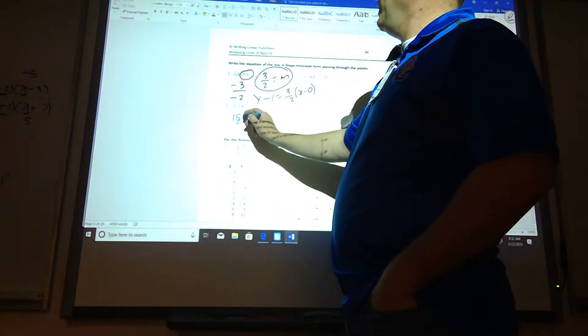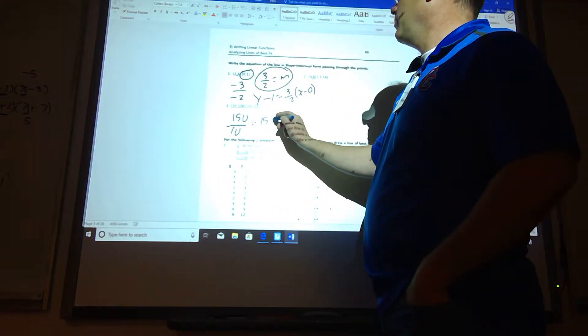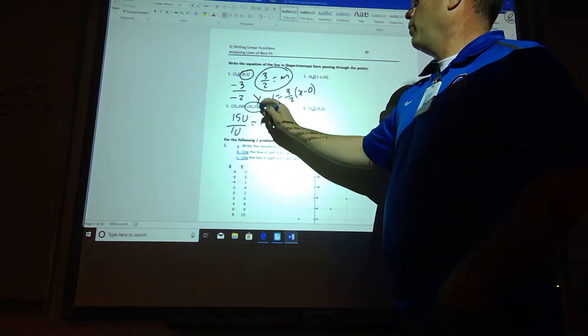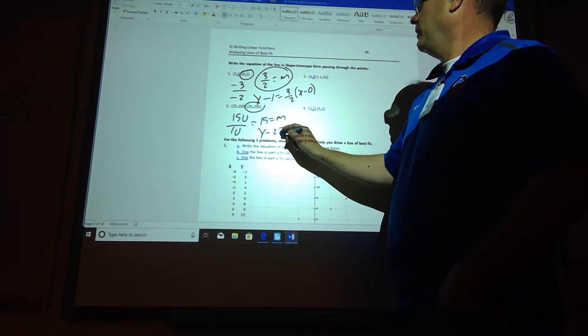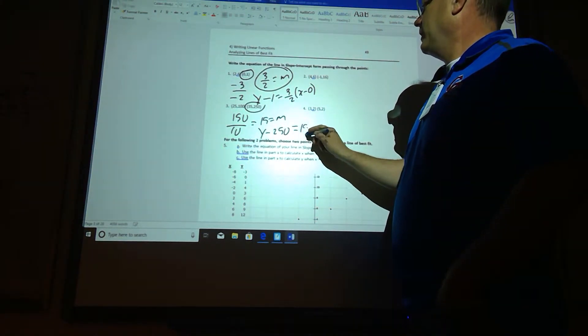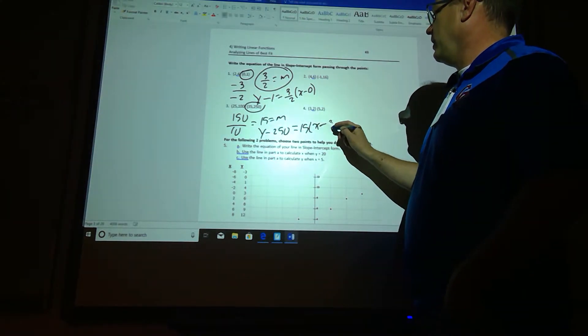I'm going to get 150 over 10, so that's 15 as a slope. So, I'm going to use point-slope form, so I get y minus 250 equals 15 times x minus 35 as my equation.